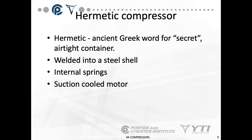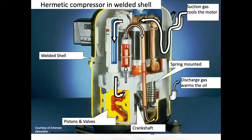The hermetic compressor — from the ancient Greek word for 'secret' — is an airtight container welded into a steel shell. It has internal springs balancing the motor, and the suction gas cools the motor. Internally, the shell contains a spring-mounted motor, discharge gas, pistons and valves, and a rotating crankshaft. The incoming suction gas comes down around the motor through pre-drilled holes to cool it.